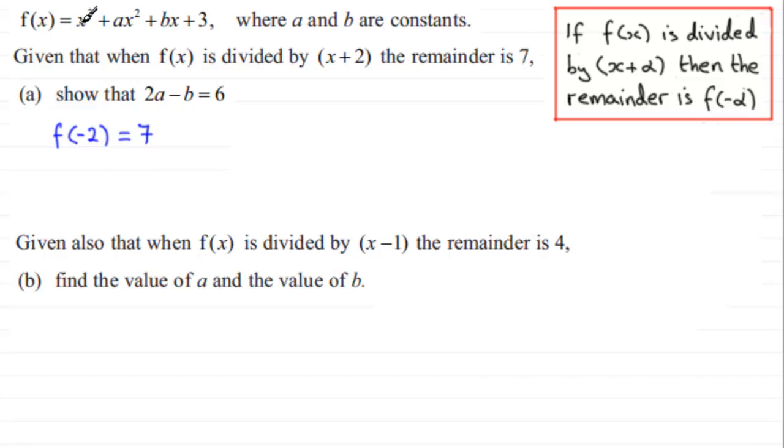And that means that we need to just substitute minus 2 into here. So we've got therefore minus 2 cubed plus a multiplied by minus 2 squared plus b times minus 2 plus 3. This gives us our remainder which is 7.